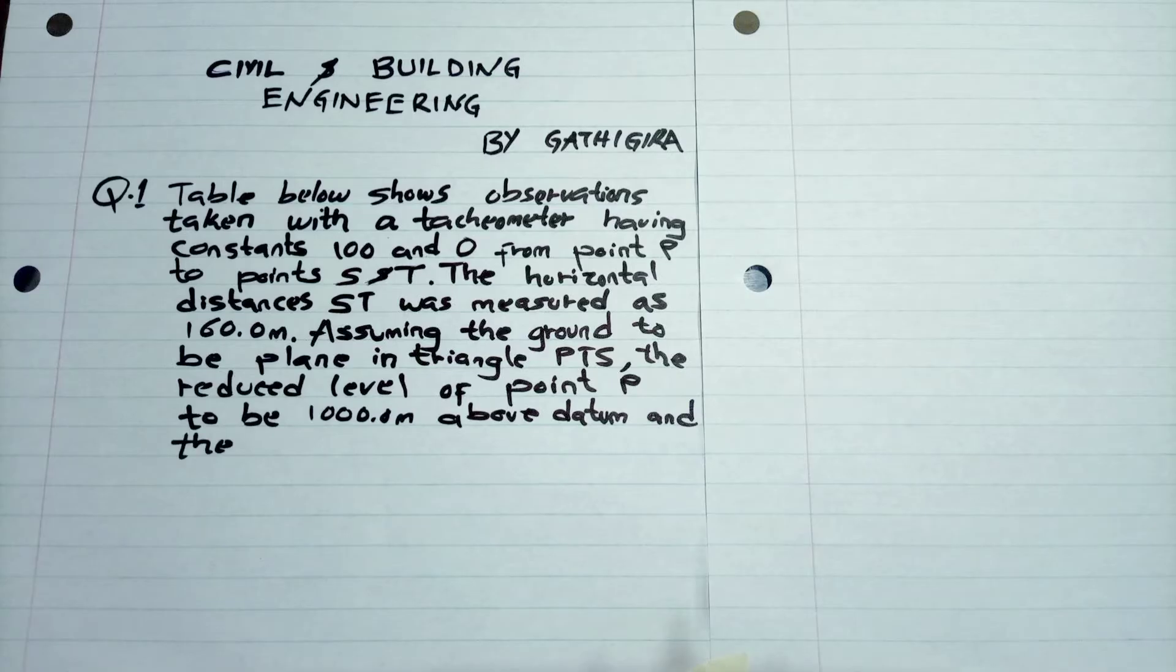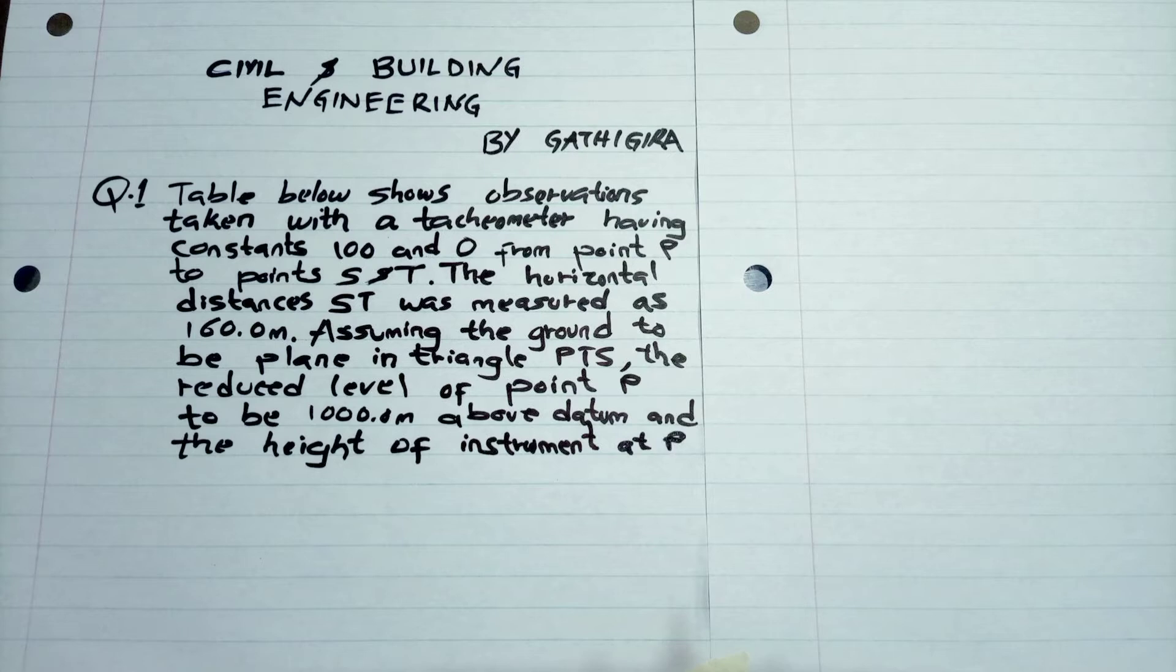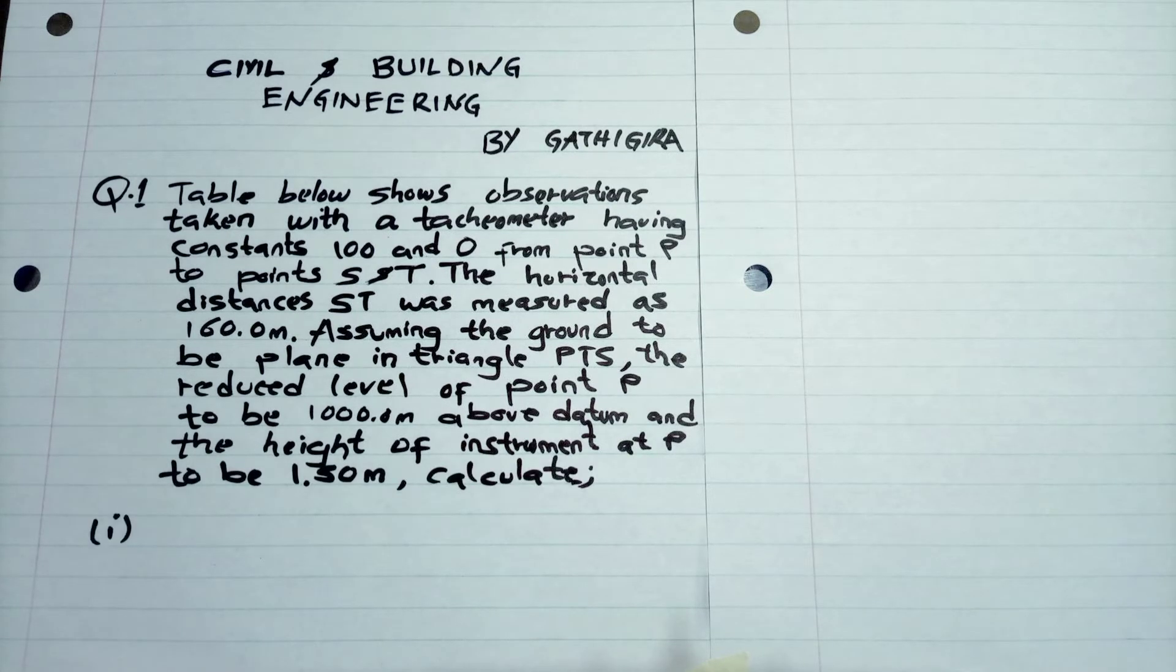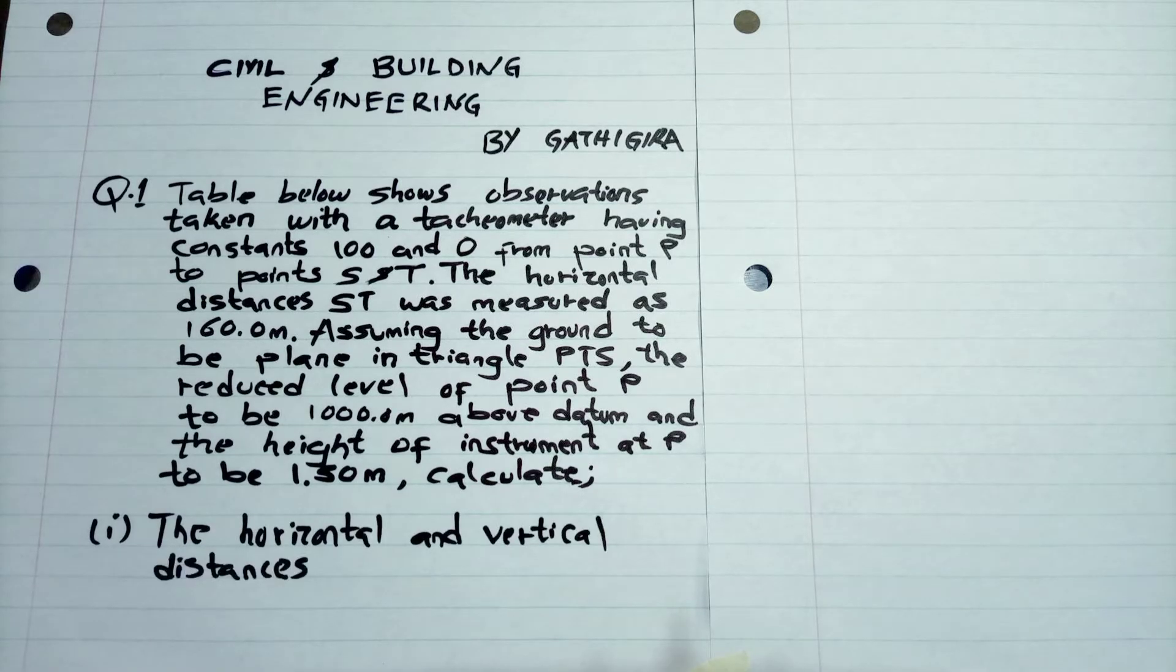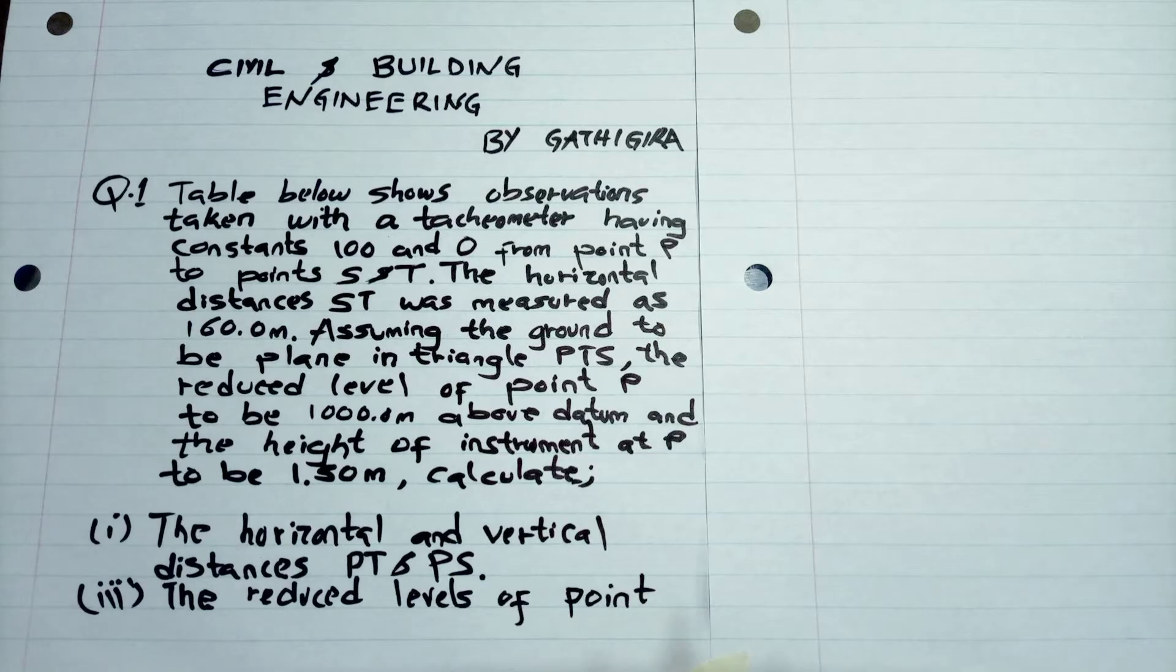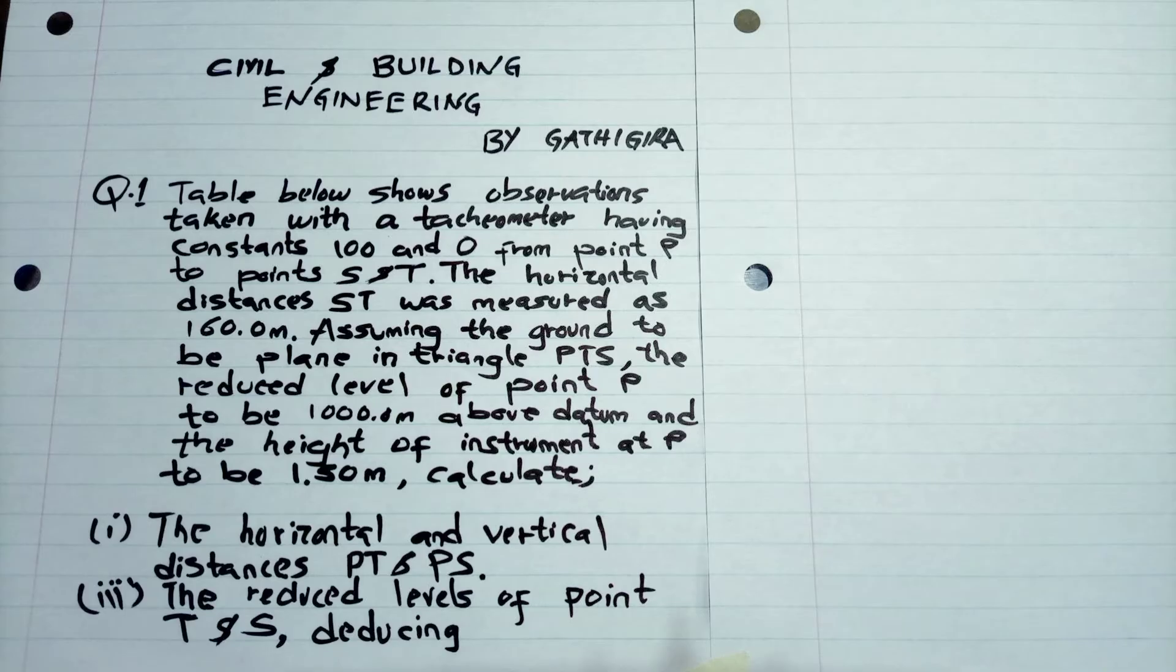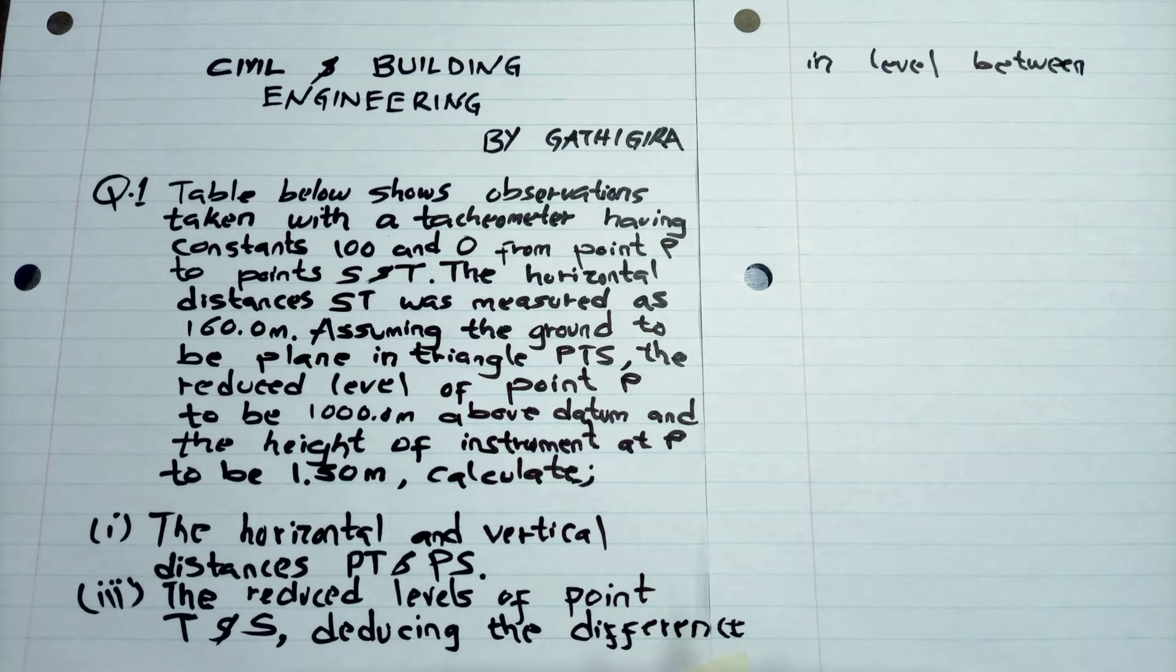And the height of instrument at P to be 1.5 meters, calculate: the horizontal and vertical distances PT and PS, the reduced levels of points P, T, and S, the difference in levels between them, and lastly, the area of triangle PTS and the horizontal angle at P.